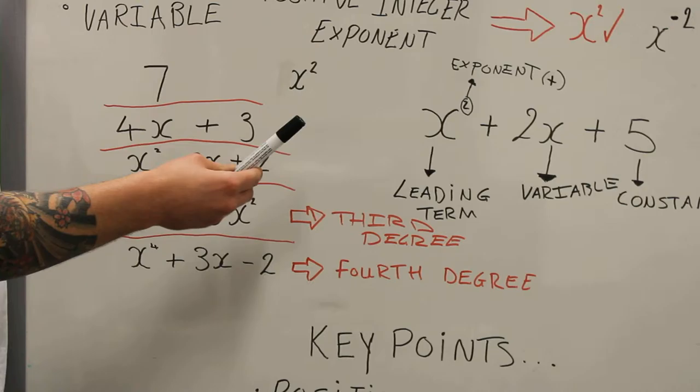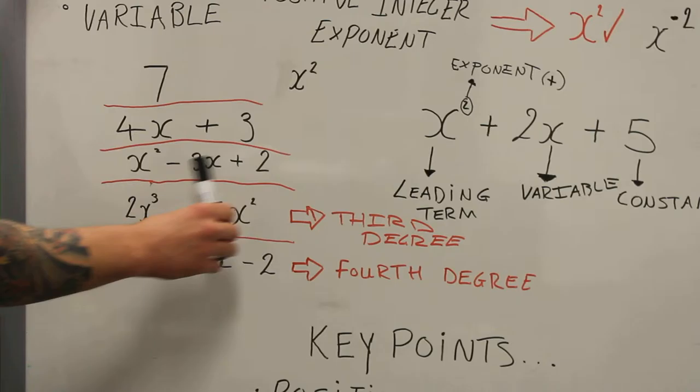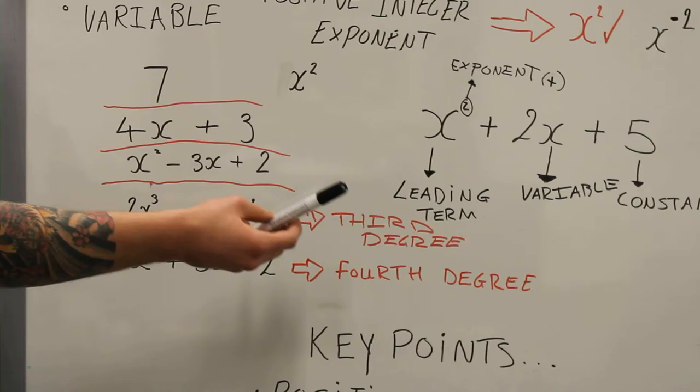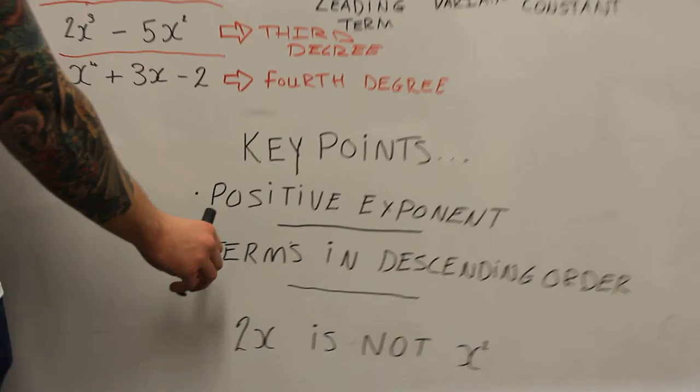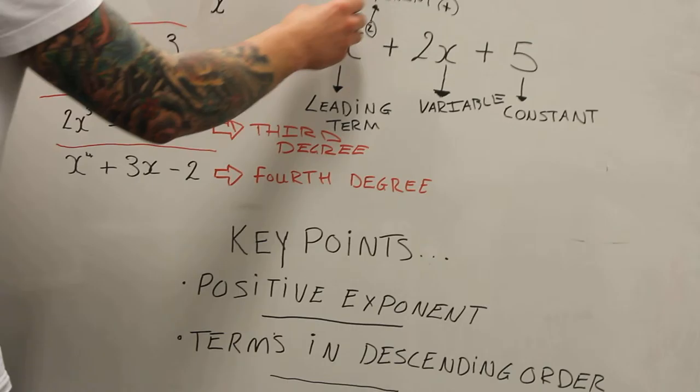We also have more names for the expressions, depending on the amount of terms in the expression. Here we have 7, which is a monomial expression, mono meaning 1. Here we have 4x plus 3, which is a binomial expression, bi meaning 2. And we have x squared minus 3x plus 2, which is a trinomial expression, because it has three terms.